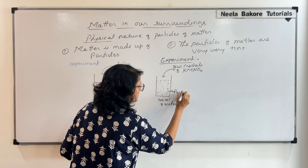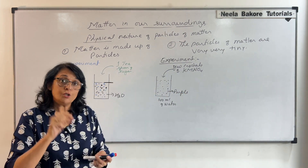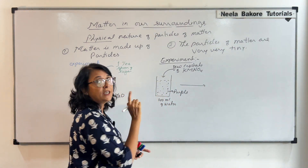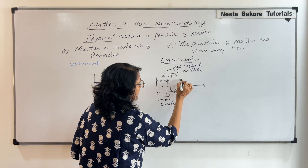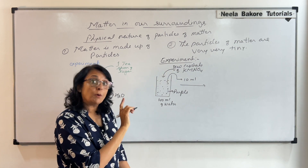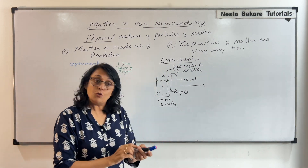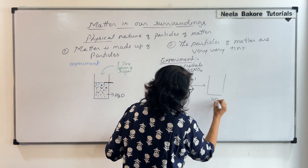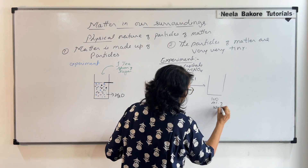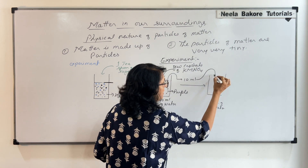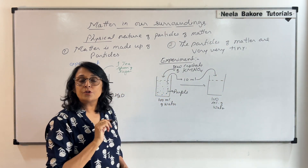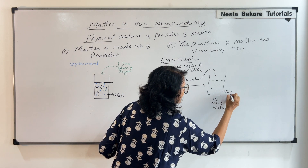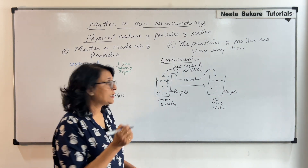We add a few crystals of potassium permanganate, KMnO4. This entire 100 mL of water turns purple from just one or two crystals. We then take 10 milliliters of this purple liquid and add it into a fresh beaker containing 100 milliliters of pure water — and this water also turns purple.